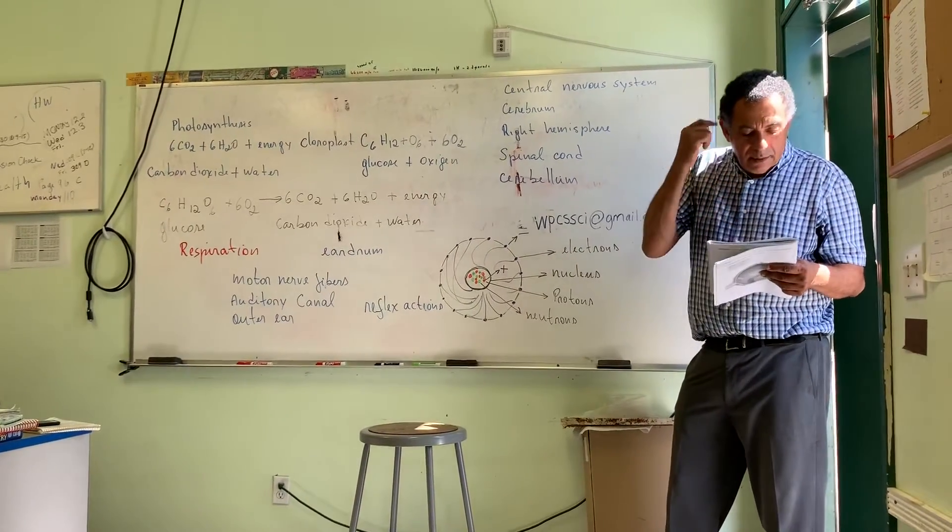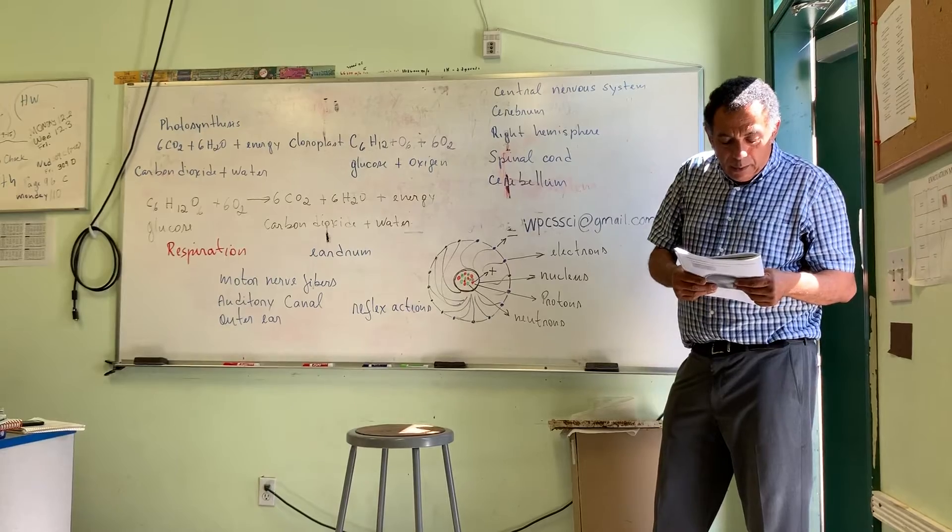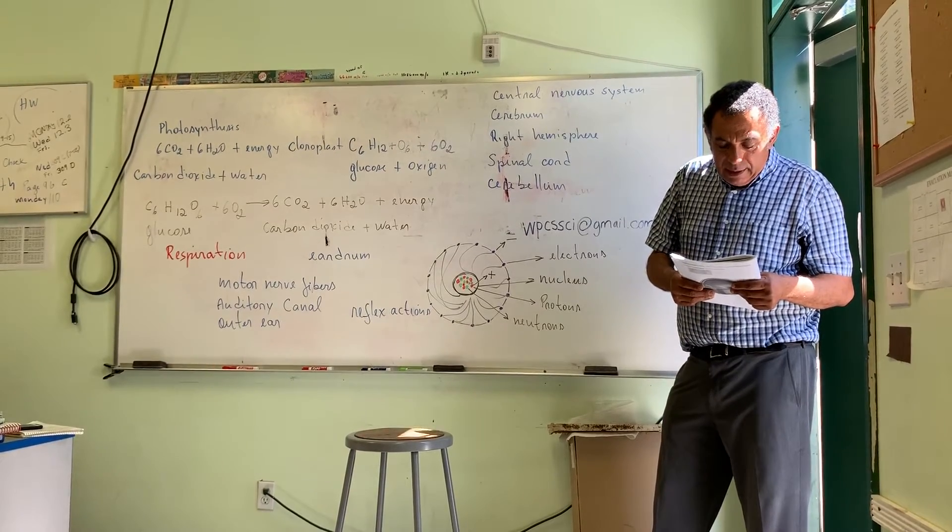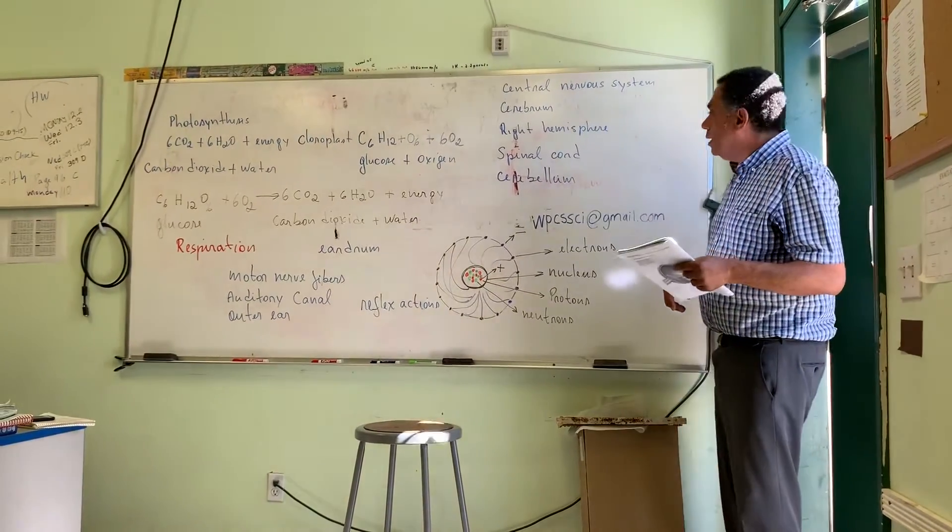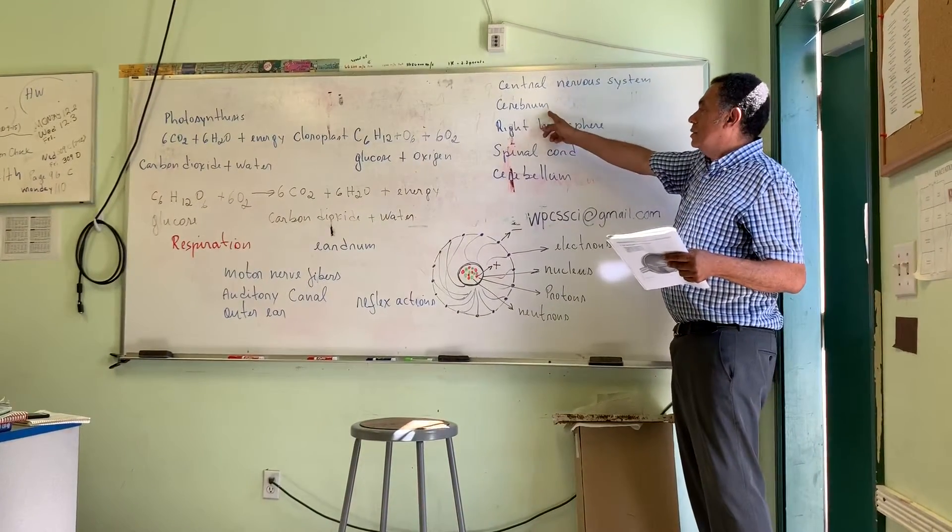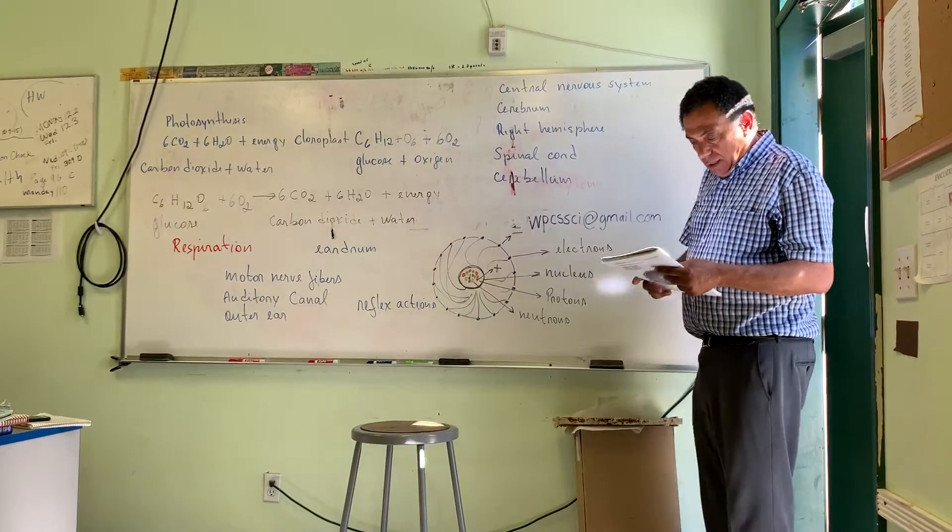And then, process of thinking in your brain. What is the part of our brain that's responsible for thinking? Your cerebrum. Your cerebrum. Cerebrum. Okay.